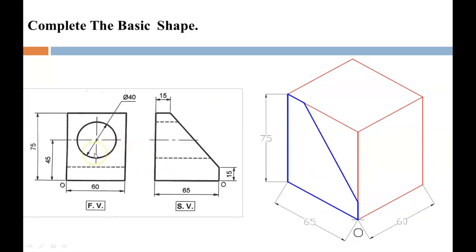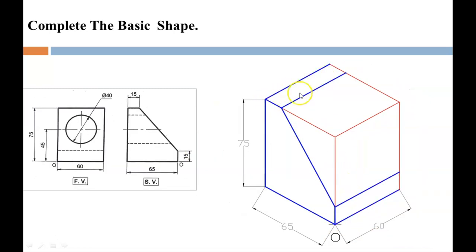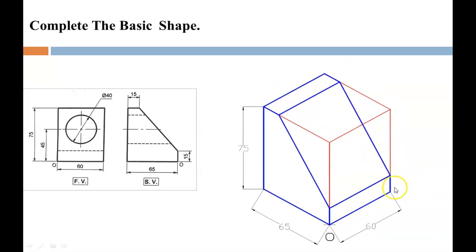Out of the two given views, select the one from which you get the base shape. The side view gives you the base shape of the object, which can be easily drawn on the side view plane. Darken the base of 65, then the vertical of 75. From one point go 15mm inside, and from the origin go 15mm up, then join these two lines to get the slant surface. Project all points by 60mm — the width of the front view — and join all points to get the complete base object.